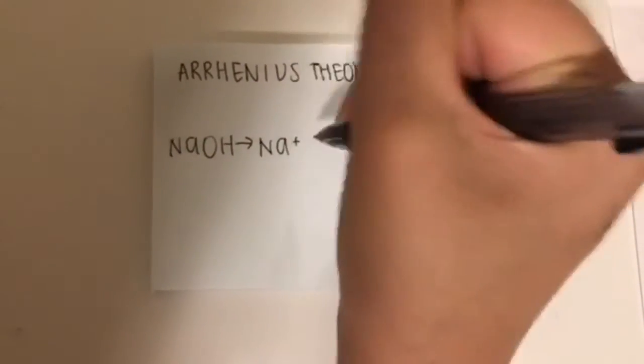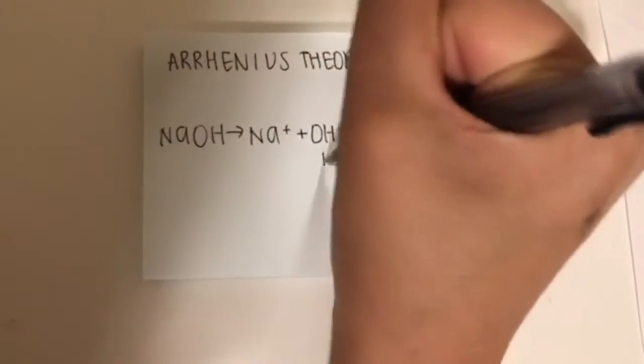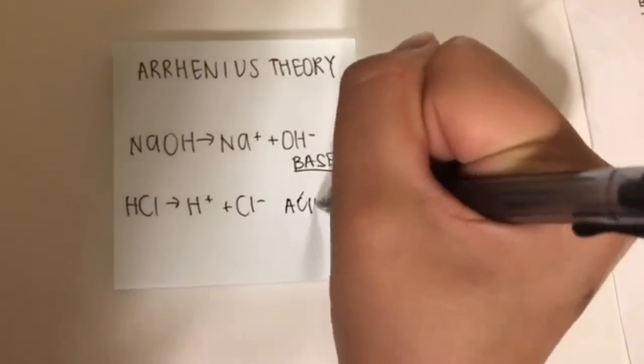The conjugate will be the products of the reaction between the bases and the acids. Acids produce hydrogen ions, bases produce OH ions — this is the Arrhenius theory.